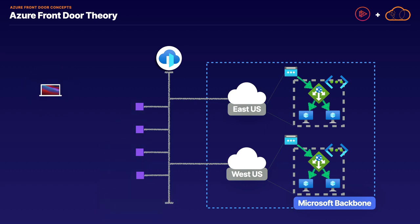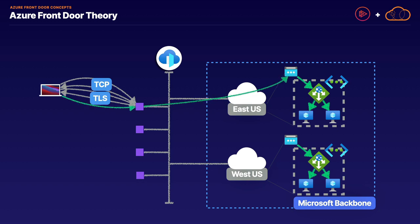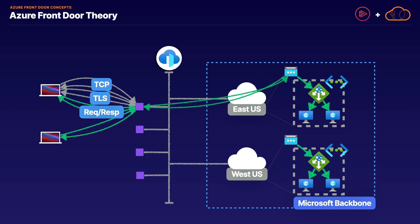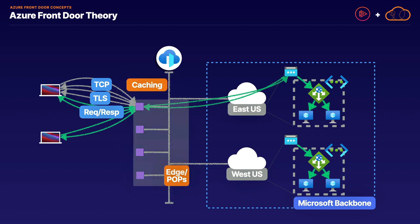When Azure Front Door is set up, when a client makes a request, they first establish a TCP connection with the point of presence — the edge location. Once that TCP connection is established, they establish TLS encryption. Then they make the request to that edge location, which forwards it to the web solution running in the back end, in this case a web application gateway. Once it dishes out traffic to those back end resources and gets a response, return traffic is sent back to the client. That content is then cached on the edge location, so if another user requests the same content, it's a much quicker response because it doesn't have to go all the way back to the web application gateway.